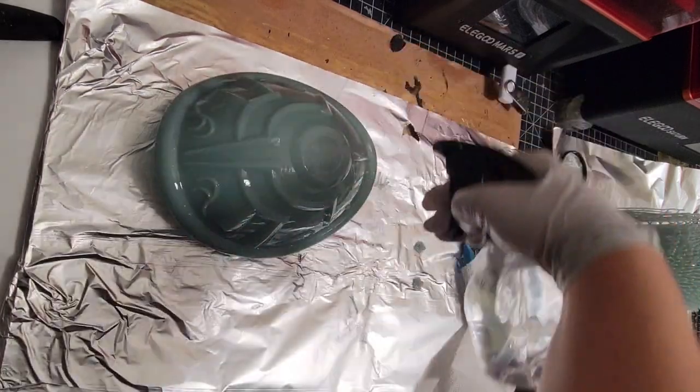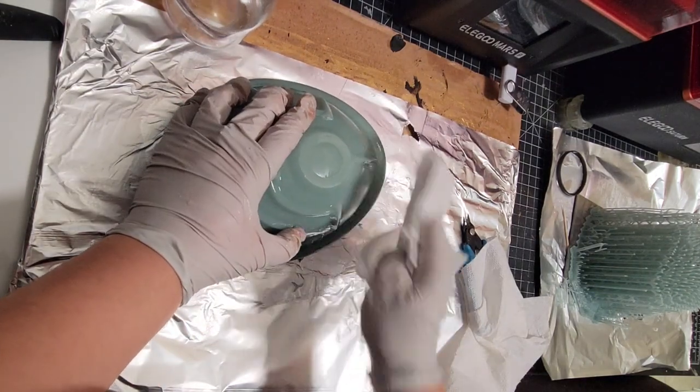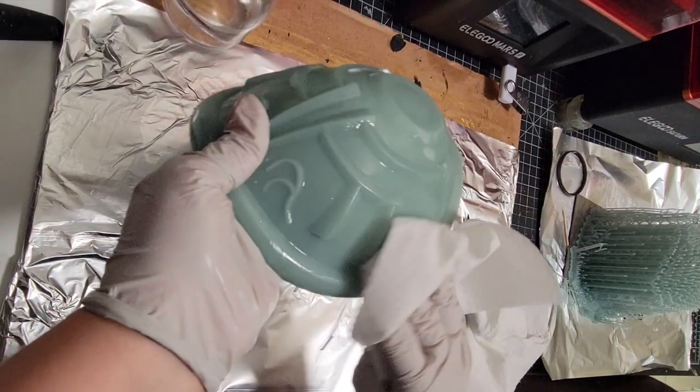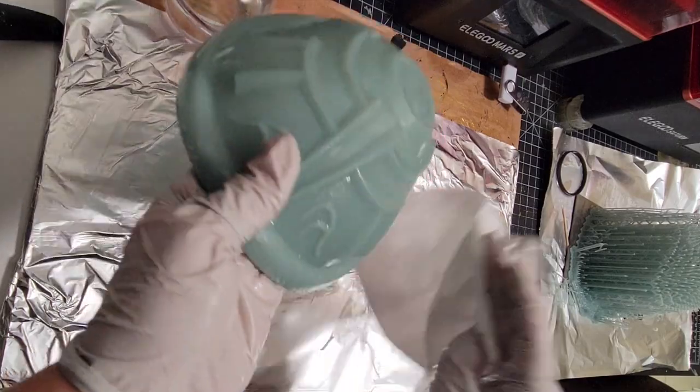And I'm just going to be spraying some alcohol and wiping and trying to get rid of any residue as well as any more lingering support pieces with my snips just to try to get it nice and cleaned up as much as possible.